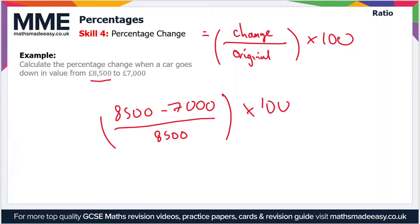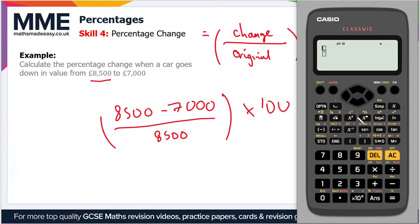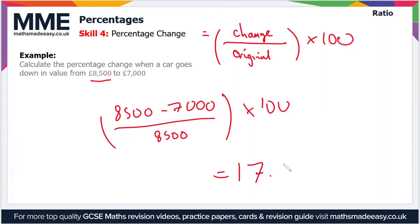Let's just put all that into the calculator. So £8,500 minus £7,000 divided by £8,500, press equals, and then times that all by 100. That gives us 17.65 to two decimal places, so equals 17.65 percent.